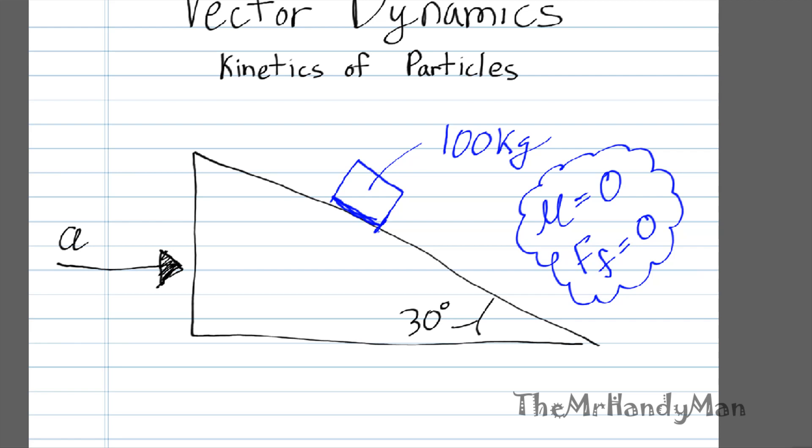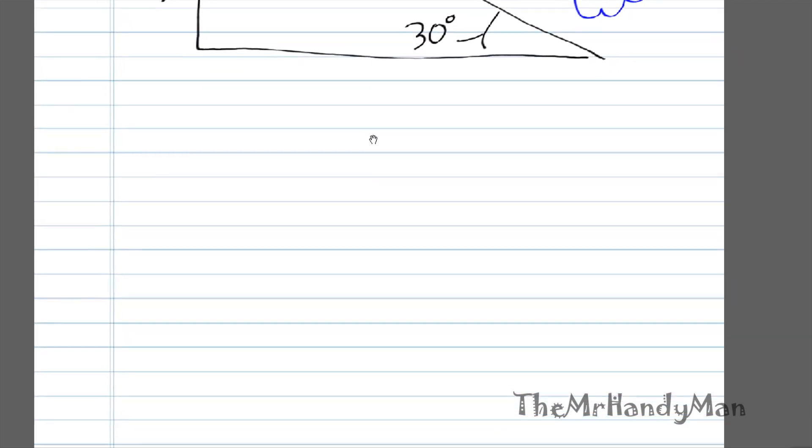The first step in any dynamics problem should be a free body diagram just to get your head around it. I'm going to draw the box right here. This is your free body diagram. I'm going to keep the same coordinate system, the traditional one, this being W. You have your N which is going to be shooting in here at 30 degrees. And that's the only forces that are being placed on it. There is no force of friction.